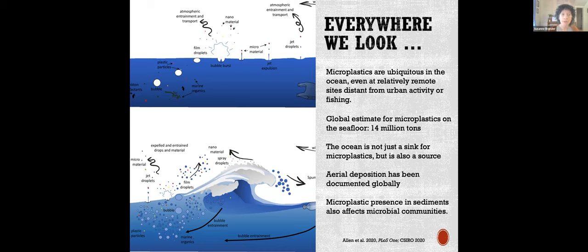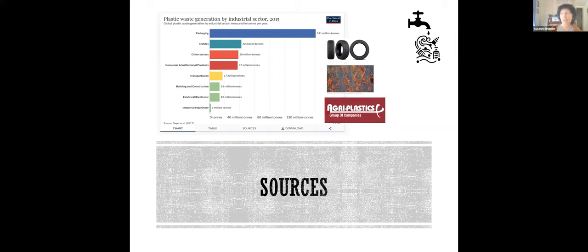But my talk will mainly focus on the environment. And we know microplastics are ubiquitous in the ocean, even at relatively remote sites. Global estimates for microplastics on the sea floor are currently 14 million tons. Most of the plastics are sinking to the sediments. But the ocean, it turns out, is not just a sink for microplastics, but it's also a source. Aerial deposition has been documented globally as well. So the ocean has been receiving our plastics for years. And now it's kind of spitting them back out at us in a way. And there are other things that we're just starting to consider, like the microplastics presence in sediments can also affect microbial communities.